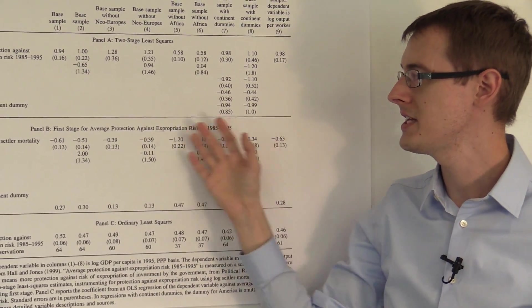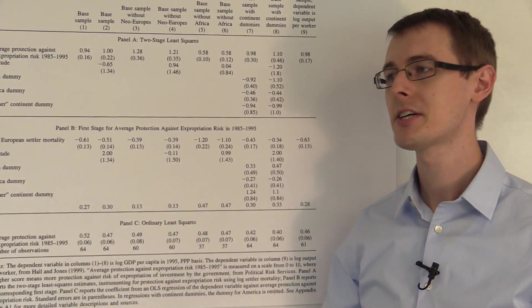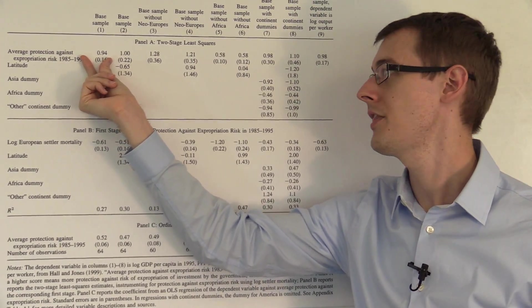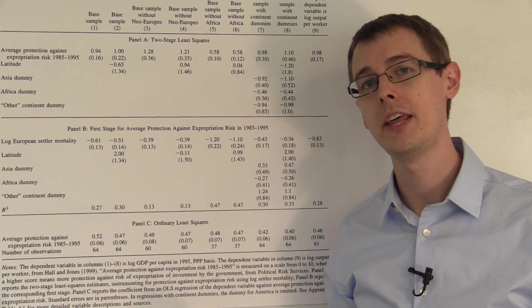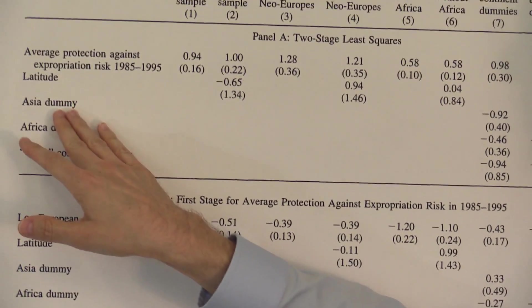Now all the rest of these columns are just doing different robustness checks to make sure that this number isn't explained away by other possible theories like maybe geography matters.